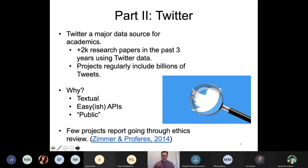As part of a research project I did with Michael Zimmer about five or six years ago, we looked at research published using Twitter data and found very few of these projects actually reported going through ethics review. Only about 4% of the published research we were able to find actually talked about going through IRB or talked about their ethics processes. I do want to emphasize that I think it's quite important that we talk about our ethics, include it as part of publications, and include that descriptive component in our evaluation.